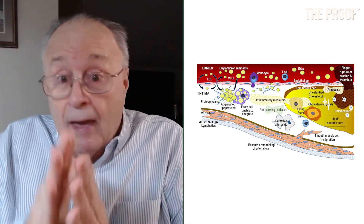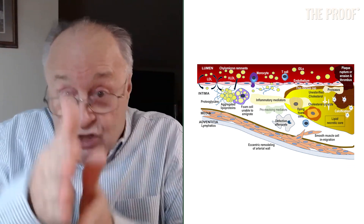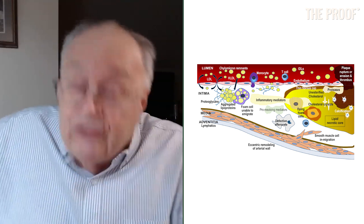A word first about the transendothelial passage — transcytosis of the ApoB particle. That can occur with perfectly healthy endothelial cells. You do not need an inflamed or disturbed endothelium for that particle to pass right through it. Caveolae and other receptors just pull those particles through. There is also a small gap between endothelial cells, a perivascular sort of channel — they can sneak through that.